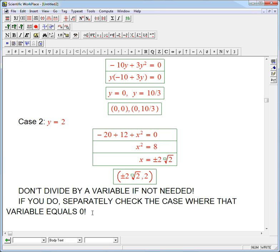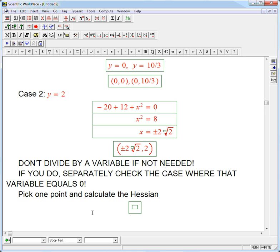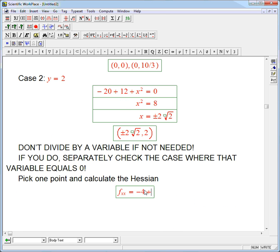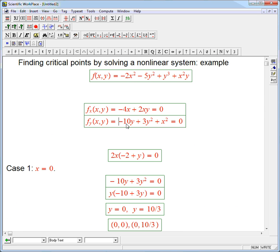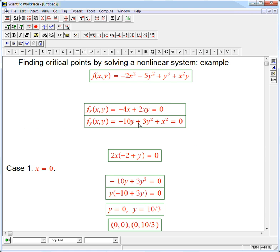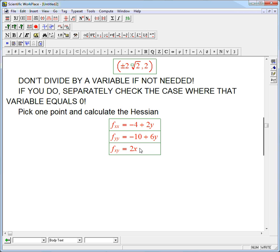Now, just to finish it up, let's just pick one point. In general, you would take all four of these points, and we're going to calculate the Hessian and see what the type is. Let's go ahead and get the second derivatives. fxx is pretty easy. That's going to be minus four plus two y. fyy is the y derivative of this guy, minus 10 plus six y. And the mixed partial is either the derivative of this with respect to y or this with respect to x. Derivative of this with respect to y is 2x. Derivative of this with respect to x is 2x. They work.